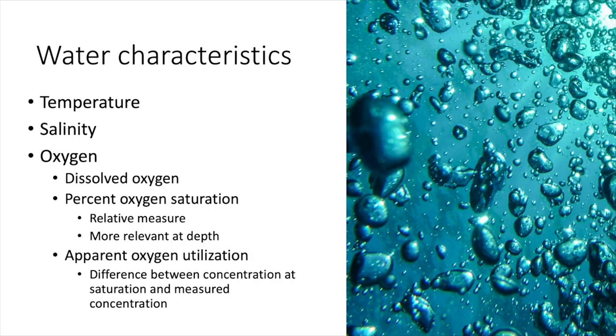We can also measure a bunch of different properties of the gases that are dissolved in the water. So things like dissolved oxygen, the percentage of oxygen saturation, which is a relative measure, which is more relevant at depth. So how much oxygen is dissolved in water goes up or the amount of oxygen that can be dissolved in water goes up as pressure goes up, which means you can dissolve more oxygen in water the lower you are in the water column. You can also look at apparent oxygen utilization. This is the difference between the concentration at saturation and measured concentration. So how much oxygen is actually being used in a particular area, which may give you some sort of idea about primary productivity and how much biomass is actually in a particular area.